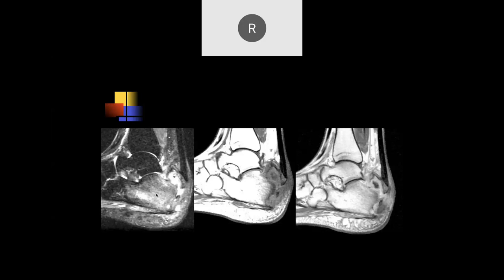If this were just an avulsion fracture, you tend not to get this much diffuse edema. You could have hemorrhage with an avulsion fracture, but here on the T1-weighted images, this looks much more chronic. This is someone who had chronic osteomyelitis that weakened the bone and got a traction injury in an area of pre-existing osteomyelitis.